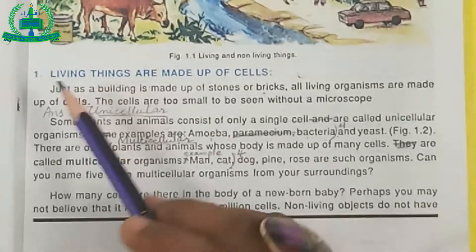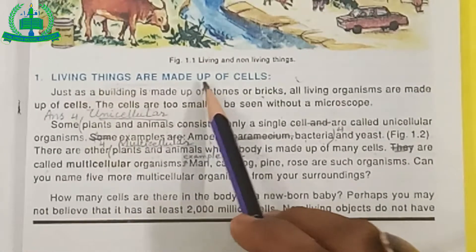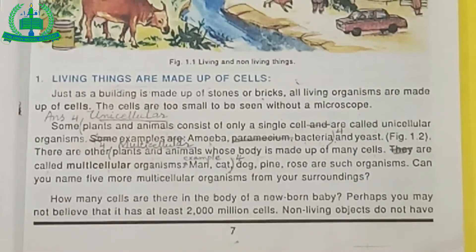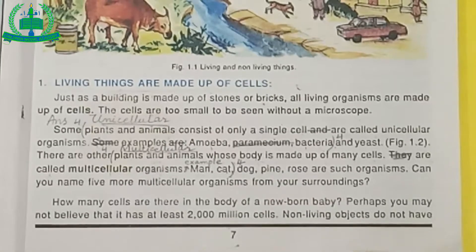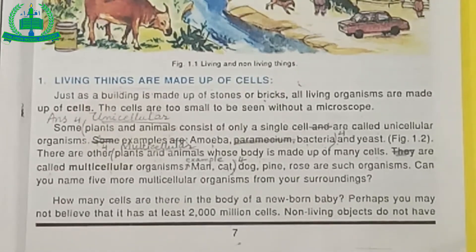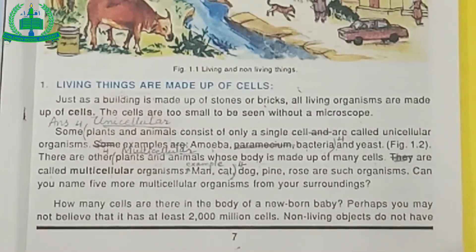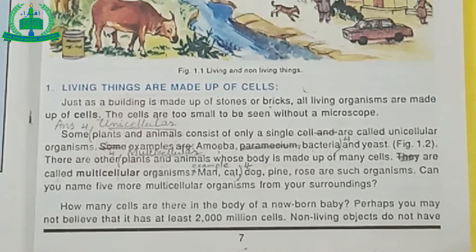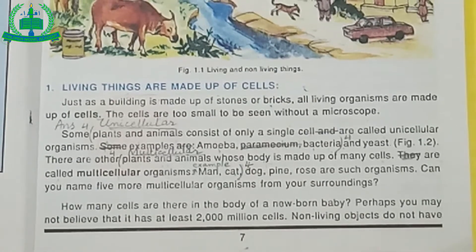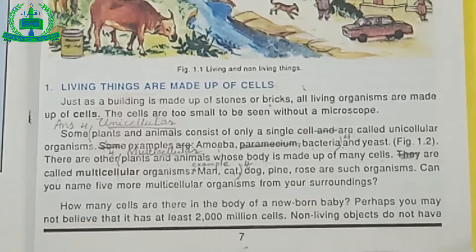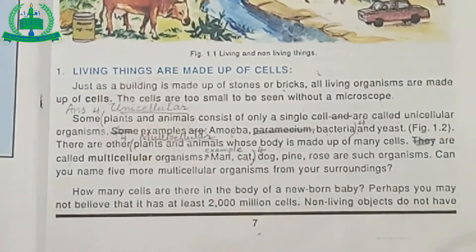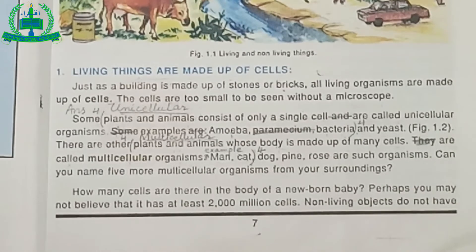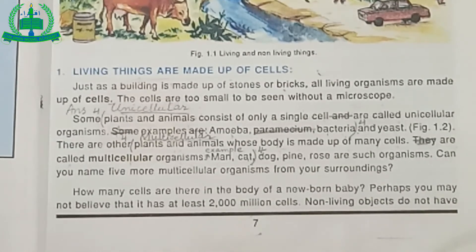The first point is: living things are made up of cells. All living things are made up of cells, and the cell is the basic unit of each living thing. Some animals and plants consist of only single cells, and they are called unicellular organisms. Examples are amoeba, paramecium, and euglena. Some living things are made up of many cells, and they are called multicellular organisms. Their examples are animals, plants, and human beings.